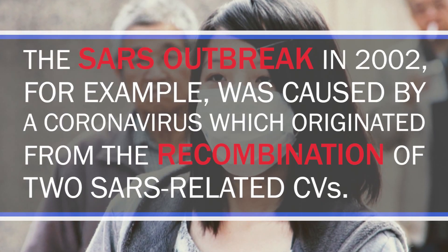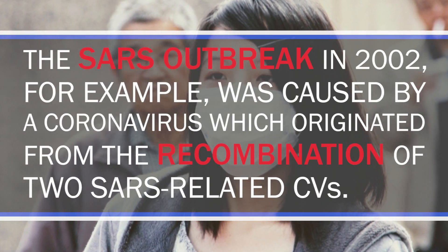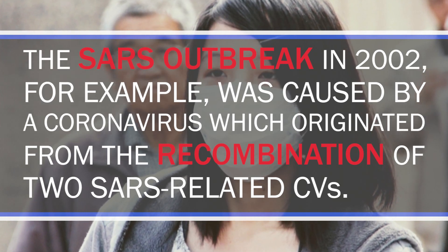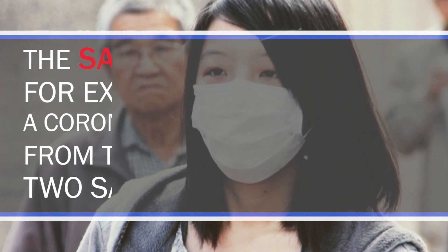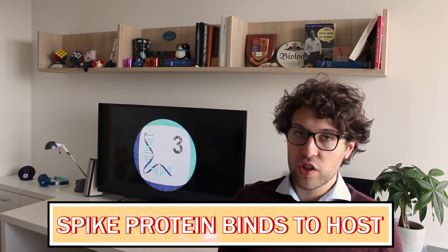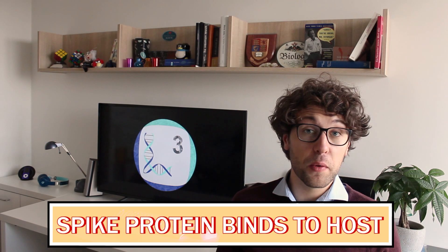And it has been shown that coronaviruses are able to undergo recombination. The SARS outbreak in 2002 for example was caused by a coronavirus which originated from the recombination of two SARS-related coronaviruses. Interestingly, the recombination seems to take place most in the region which produces the spike protein which is very important for binding to the host cell. In this manner, coronaviruses have a higher chance to infect new species.